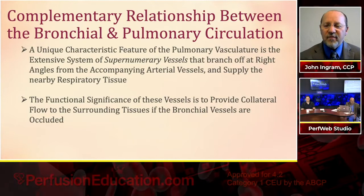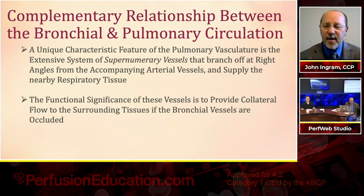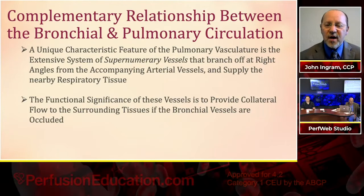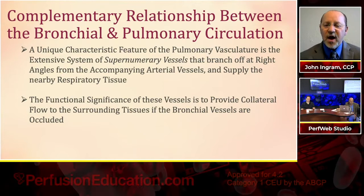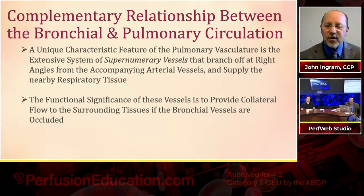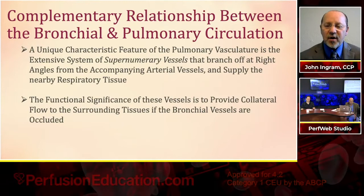A unique characteristic feature of the pulmonary vasculature is an extensive system of supernumerary vessels. These vessels branch off at right angles from the arterioles and supply nearby respiratory tissue. The functional significance of these vessels is to provide collateral flow to surrounding tissues if the bronchial vessels are ever occluded. So the pulmonary circulation also perfuses our lung tissue — in addition to the bronchial circulation.